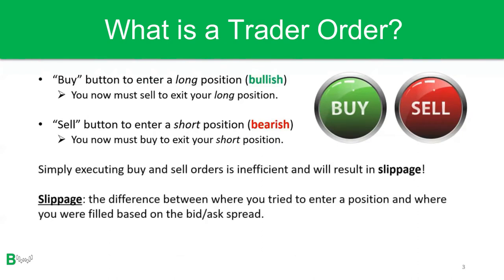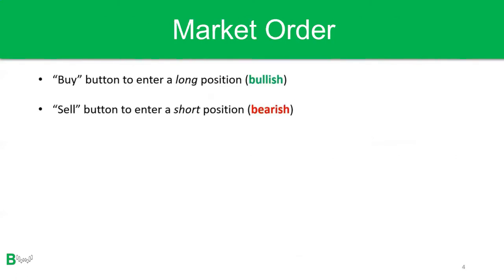Simply executing buy and sell orders is inefficient and will result in slippage. Slippage is simply the difference between where you tried to enter your position and where you were filled, based on the bid-ask spread. The first order we're going to talk about is a market order — this is the simplest of them all.